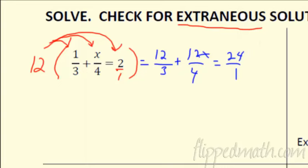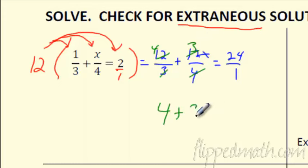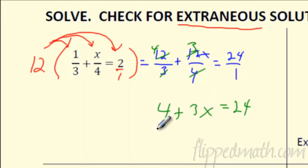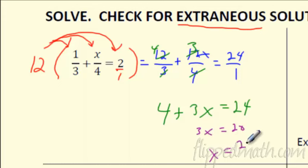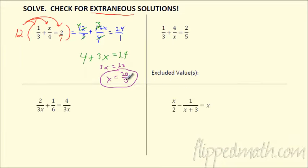Now things start canceling. 12 over 3 goes 4 times, so we get 4. Then 4 goes into 12 three times, so we get 3x. And 24 over 1 is 24. Fractions are gone. Now just solve for x: subtract 4 from both sides, we get 3x equals 20, then divide both sides by 3. We're looking at x equals 20 over 3. That's our solution — the general idea is just getting rid of the fractions.